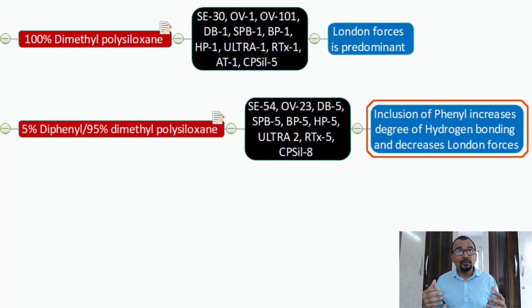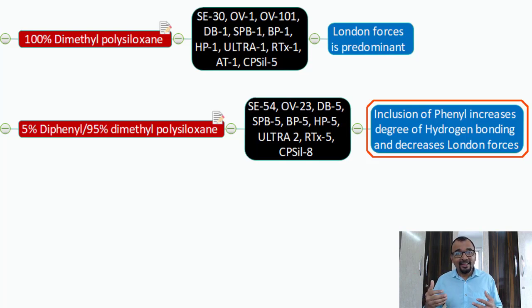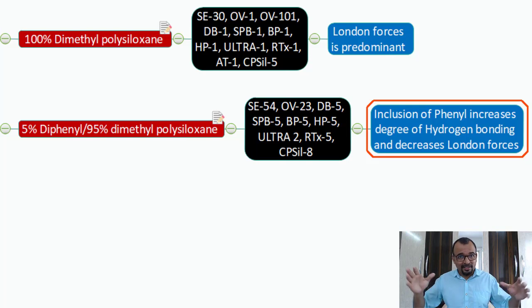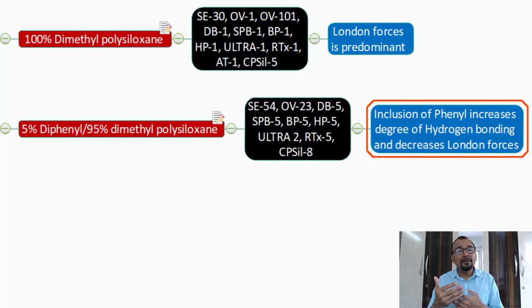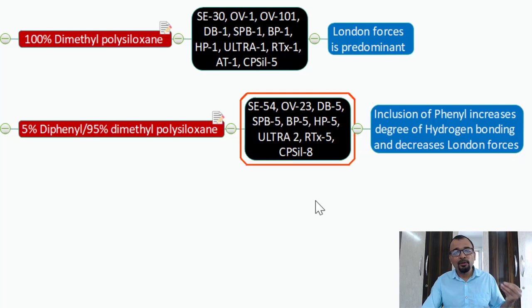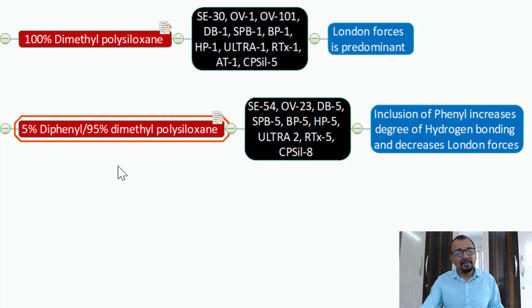Hydrogen bonding is governed by the electronegativity of your compound. If a compound is highly electronegative, it will have more interaction with the phenyl ring through hydrogen bonding. If you have a mixture of compounds with different electronegativities, hydrogen bonding becomes your preferred interaction. You may select commercial phases such as SC54, OB223, SPB5, BP5, DB5, or HP5 — these all have 5% diphenyl and 95% dimethyl polysiloxane.